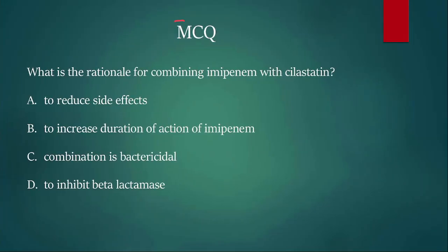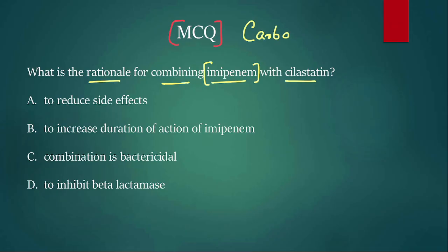Let us move to the next MCQ: what is the rationale for combining imipenem with cilastatin? Imipenem belongs to a beta-lactam class called carbapenem. We have imipenem, doripenem, ertapenem, meropenem — among these, why is imipenem combined with cilastatin?